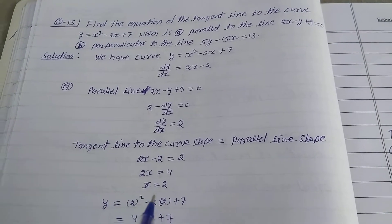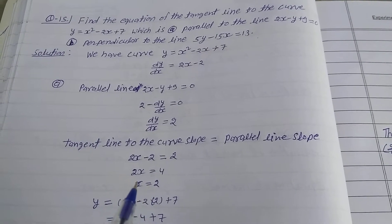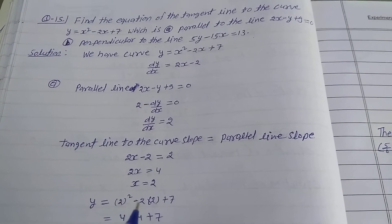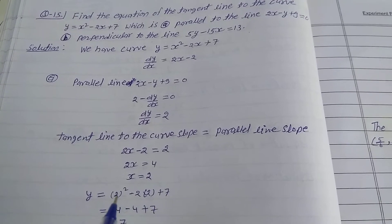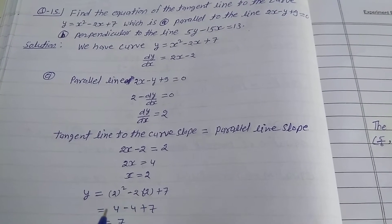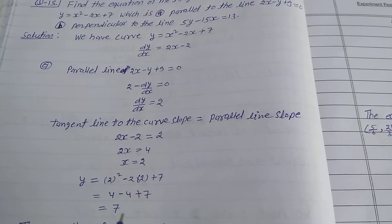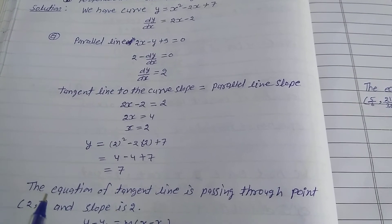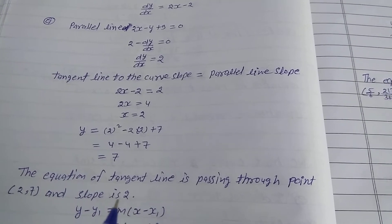From 2x - 2 = 2, transferring: 2x = 4, so x = 2. Now find the y-value by substituting x = 2 into the curve equation: y = (2)² - 2(2) + 7 = 4 - 4 + 7 = 7. So y = 7, and the point on the curve is (2, 7).